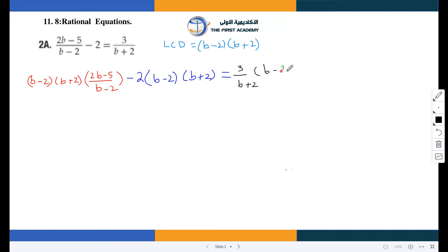Now after this I will see if I can cancel something from both sides so the fraction will be removed. B minus 2 will cancel with B minus 2, B plus 2 will cancel with B plus 2. Now the remaining part we will multiply.